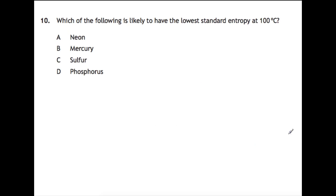Finally, looking at question 10: which of the following is likely to have the lowest standard entropy at 100 degrees? For this you have to look at if something is solid, liquid, or gas. Solids would have the lowest entropy followed by liquids then gases. You're at 100 degrees so you need to know if something has boiled or melted.